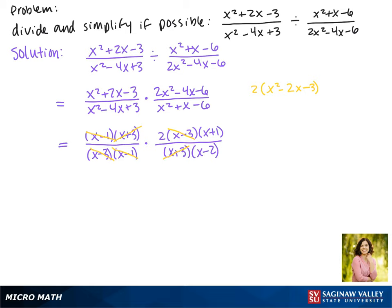So what we have left in the numerator is a 2 times x plus 1 and in the denominator x minus 2. This is the factored way to leave the answer. You can also distribute the 2 in the numerator and get 2x plus 2 divided by x minus 2.